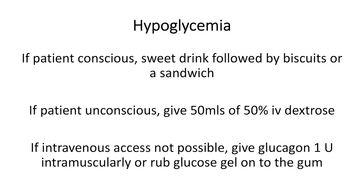For a patient with hypoglycemia: if the patient is conscious, give a sugary drink followed by biscuits or a sandwich. If the patient is unconscious, give 50 ml of 50% dextrose intravenously. If intravenous access is not possible, give glucagon 1 unit intramuscularly, or rub glucose gel on the gum.